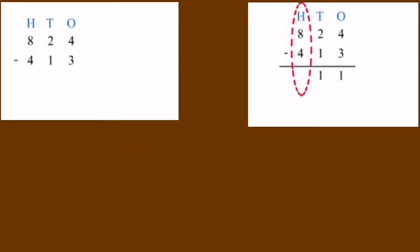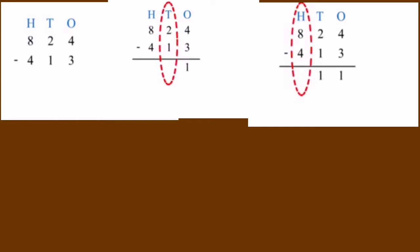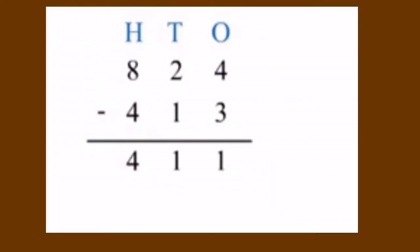When subtracting, always start from the ones place. In the ones place: 4 minus 3 is 1. Move to the tens place: 2 minus 1 is 1. Then the hundreds place: 8 minus 4 is 4. The final answer is 411. We did not borrow from any place because the upper numbers are greater than the lower numbers.